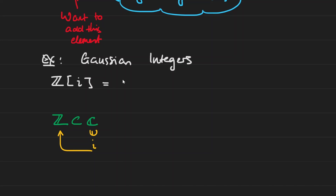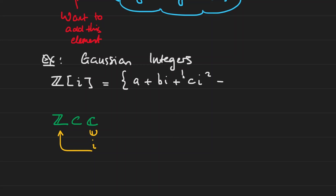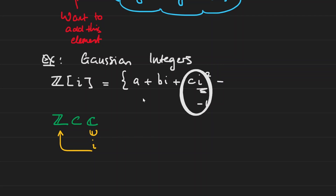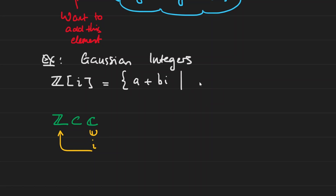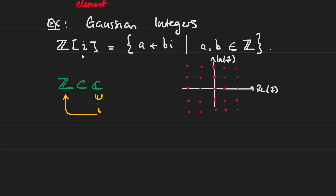So how would Z adjoined i look? It's going to be the set of elements of the form a + bi. You might say we need a c·i² and maybe a d·i³ and so on, just like with polynomials — but you actually don't need to keep going. It's enough just to stop at the bi term. The reason is because i² equals negative one, so if you include i² you're basically adding negative c, which is an integer — you can just absorb it into the existing integer a. So there's no need for higher powers of i; a and b must be integers. If you want a picture of the Gaussian integers, it's basically a lattice in the complex plane. I want to mention that this element i is a root of the polynomial x² + 1, where this polynomial lives in Z[x].